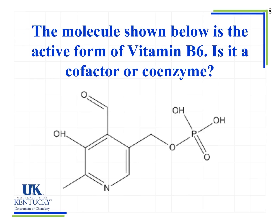For example, the active form of vitamin B6 — is it a cofactor or a coenzyme? Because it is an organic compound with lots of carbons and hydrogens (along with some nitrogen, oxygen, and phosphorus, but no metals), it is primarily carbon and hydrogen, making it an organic compound. Therefore, it is a coenzyme.